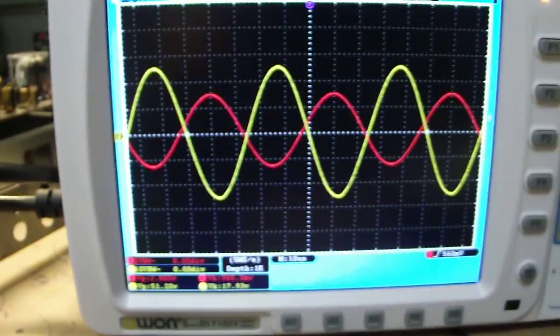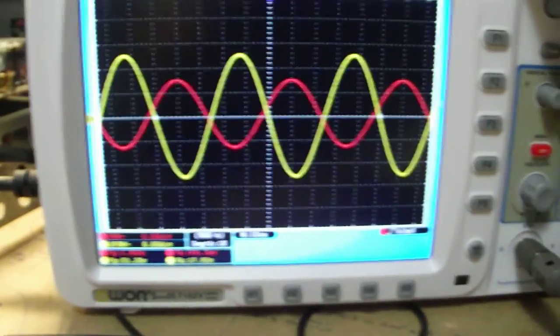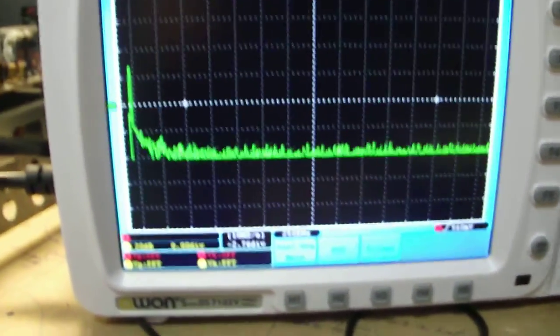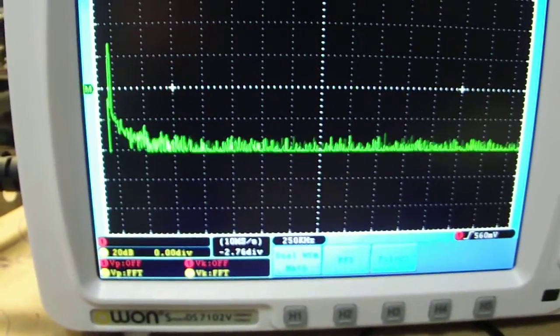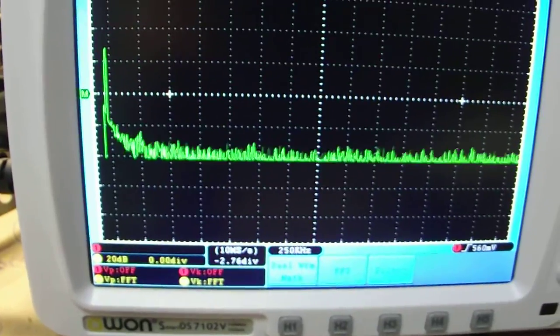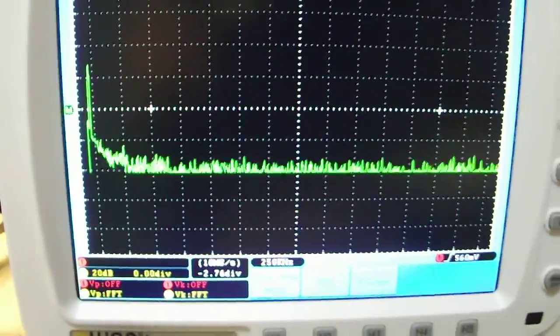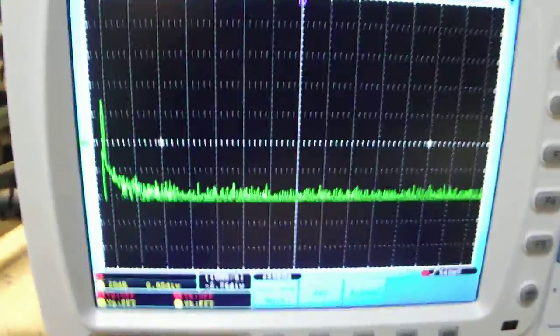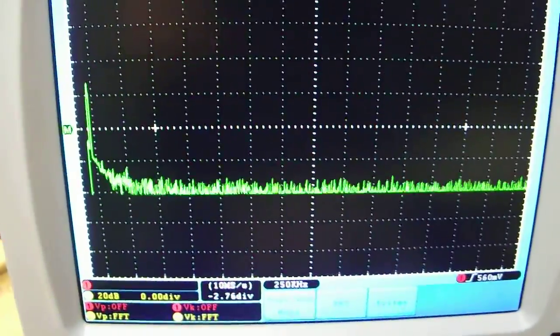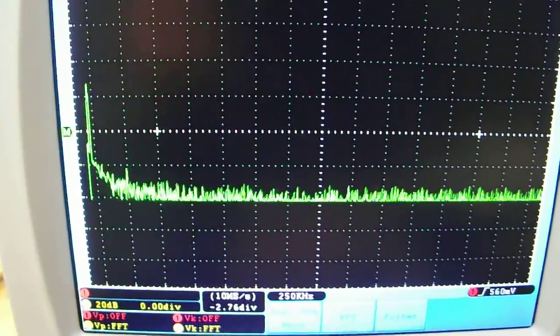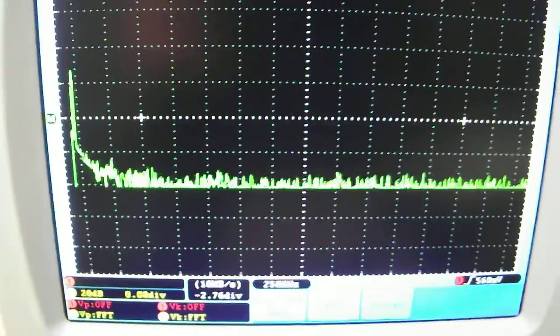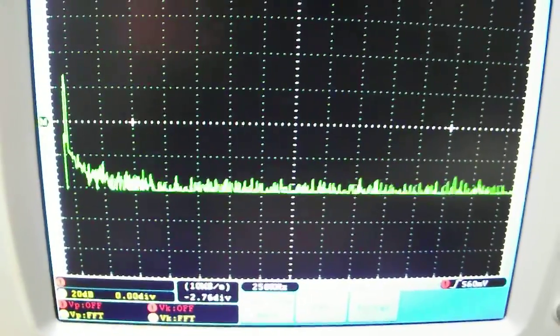And I'll switch it to the FFT spectrum analyzer. Unfortunately, I can't see the waveform and the spectrum analyzer at the same time with the scope. So I'll turn the volume up again. Right now it looks like there's pretty much no distortion. Maybe just a tiny bit at the first harmonic. Or third, I should say.